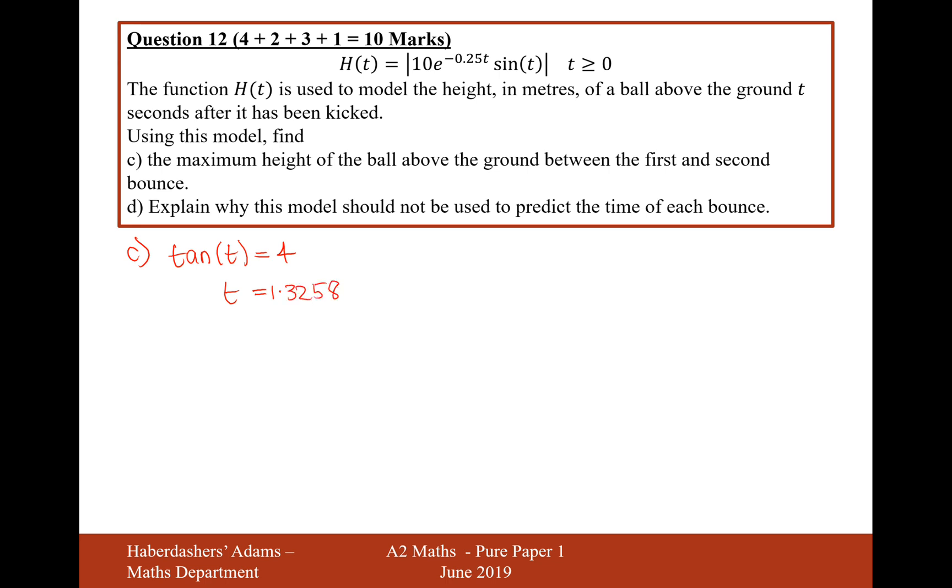That will be the first maximum point. The next maximum point, so the next minimum point for the original f of x graph is going to be 4.467. You find the next solution to tan by just adding on pi each time.